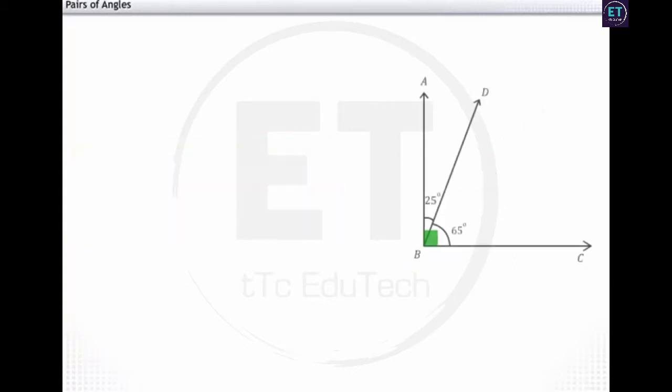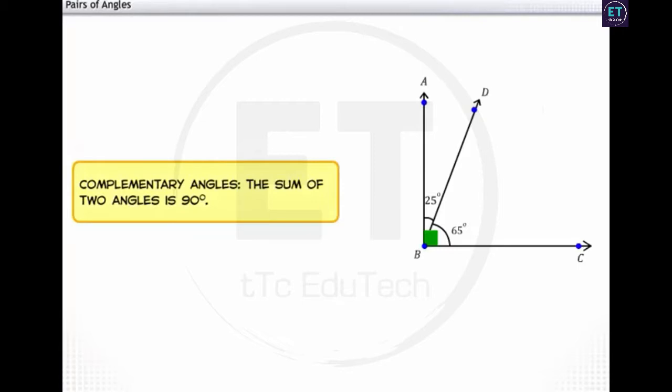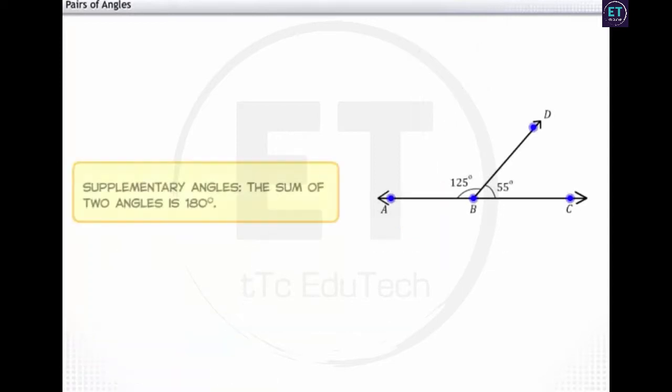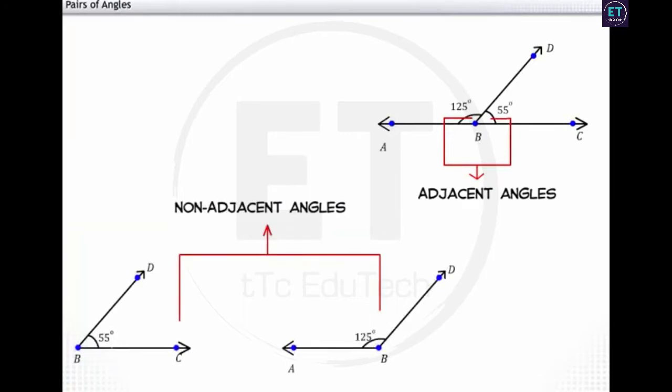Two angles are said to be complementary if their sum is 90 degrees. They may or may not be adjacent angles. Two angles are supplementary if their sum is 180 degrees. They may or may not be adjacent angles.